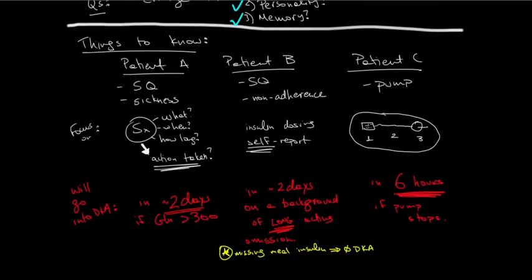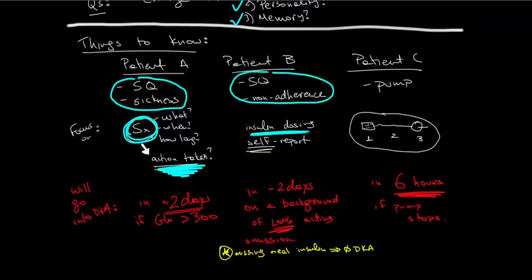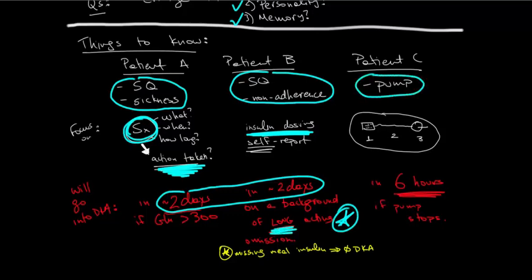In the three patients we took an example, if you're dealing with someone that is sick and takes subcutaneous insulin, it's important to focus on what actions they took to prevent DKA at home. If you're dealing with someone that you suspect non-adherence, it's important to take a good self-report of insulin doses. These patients will go into DKA over a couple of days, both of them. But it's important to know that for non-adherence patients, long-acting insulin omission is the culprit here. If you're having someone on a pump, you have to focus on the mechanical components, the pump itself, the tubing, and the insertion side. But it's key to recognize that these patients can and will go into DKA overnight.